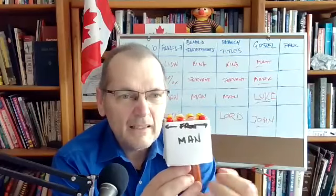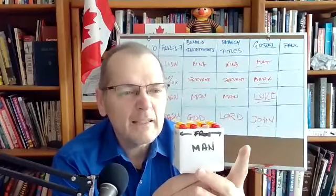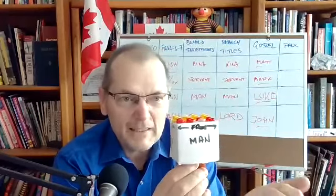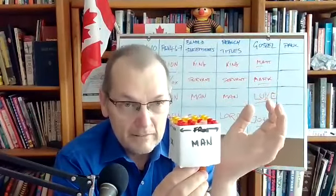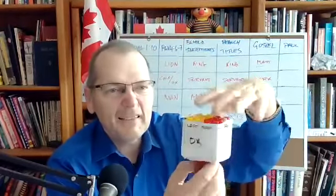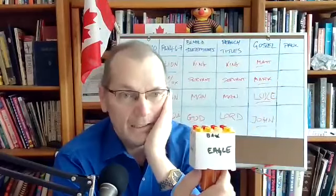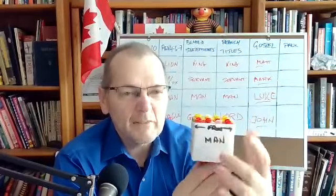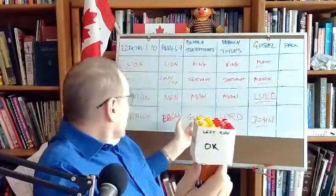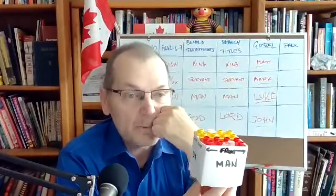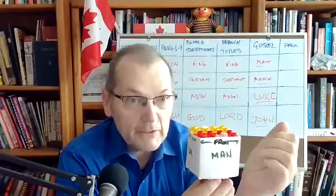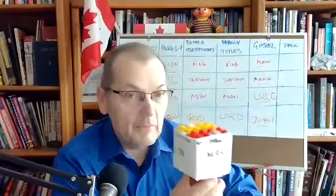If you look at the front, we understood that Luke was the writer that brought before us Christ as the perfect man. But if you look directly behind, you see the eagle — so while he was a man, we learned in John he was actually God manifest in flesh. When you look on the left side, you have the ox or calf, beasts of burden, a servant. So we learned that in Mark we have the beautiful picture of Christ as the perfect servant.